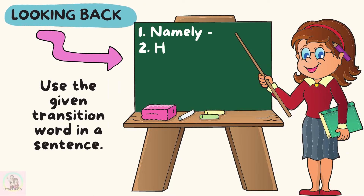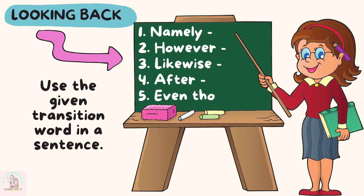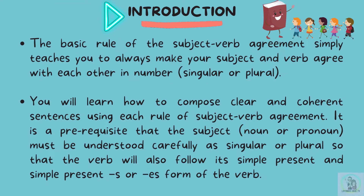Now, looking back to our previous lesson, I want you to use the given transition word in a sentence. The basic rule of subject-verb agreement simply teaches you to always make your subject and verb agree with each other in number — singular or plural. You will learn how to compose clear and coherent sentences using each rule of subject-verb agreement. It is a prerequisite that the subject, noun or pronoun, must be understood carefully as singular or plural so that the verb will also follow its simple present and simple present S or ES form.